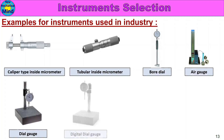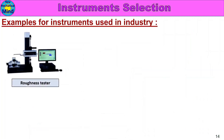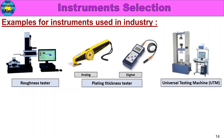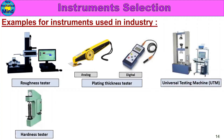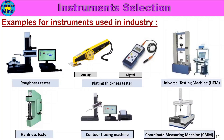Dial Gauge, Digital Dial Gauge, Taper Gauge, Measuring Tap, Roughness Tester, Plating Thickness Tester (analog and digital), Universal Testing Machine (UTM), Hardness Tester, Counter Tracing Machine, Forward Net Measuring Machine, CMM (Coordinate Measuring Machine). You can use any of these instruments in your company.